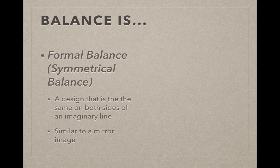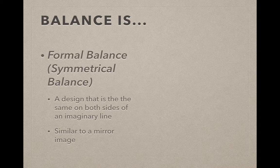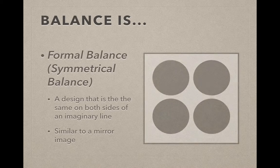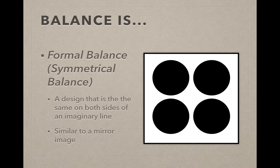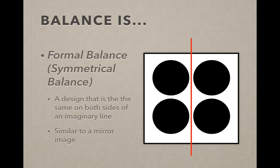The first type of balance we're going to talk about is formal balance, or what we call symmetrical as well. A design that is the same on both sides of an imaginary line or its mirror image is what we're talking about when we talk about formal balance. In this simple example, you have the exact same circles appearing on either side of that center line.